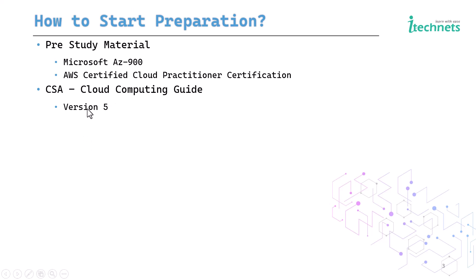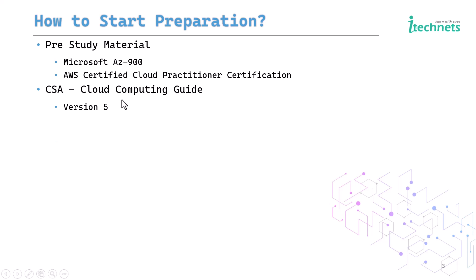You can consider version 5 or also refer to version 4, which is also a very good book to start your exam preparation. You can focus only on Domain 1, which describes cloud computing concepts: what is cloud computing, the different benefits, types of cloud computing, the different service models, and the shared responsibility model — which is very important for understanding the responsibilities of customers versus CSPs.